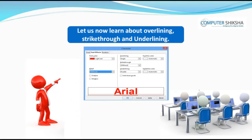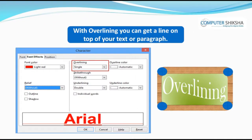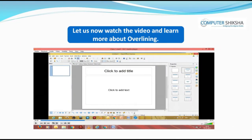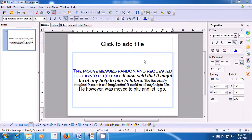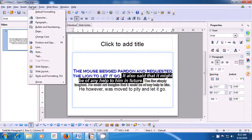Let us now learn about Overlining, Strikethrough and Underlining. Can you tell what happens with Overlining? With Overlining, you can get a line on top of your text or paragraph. There are many types of overlining, and while using overline you can even change the color of the overline. Let us now watch the video and learn more about Overlining. To apply overline, we first need to select the line or the text. As is being shown in the video, we select the line, then take the pointer to the Format option of the menu bar and left click on it. From the box which opens, select the Character option.